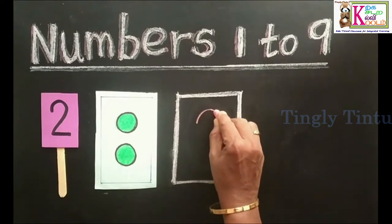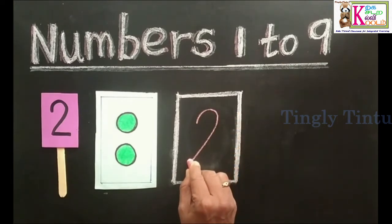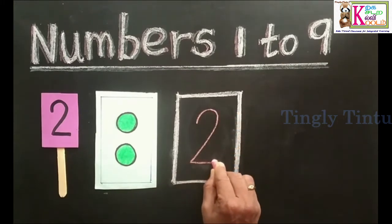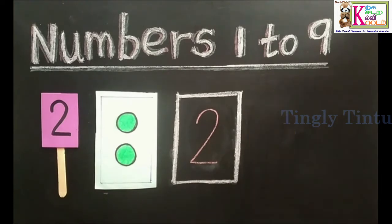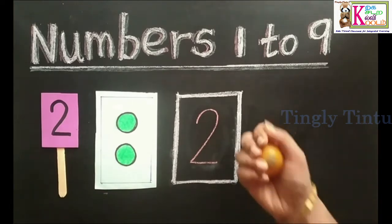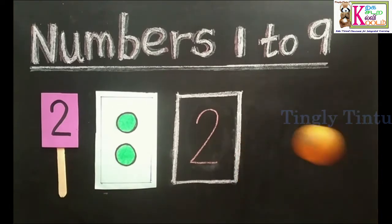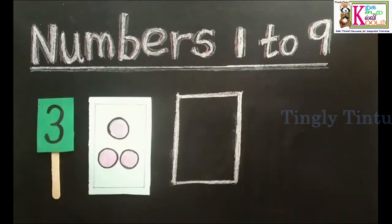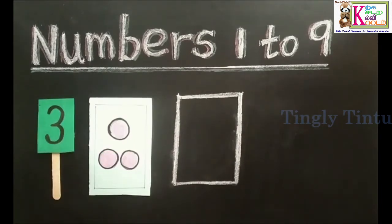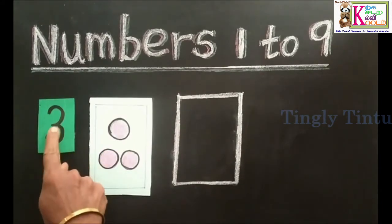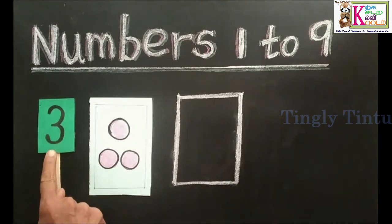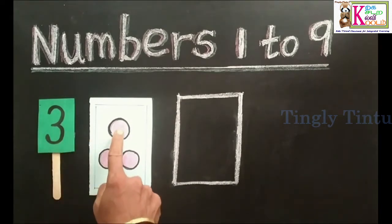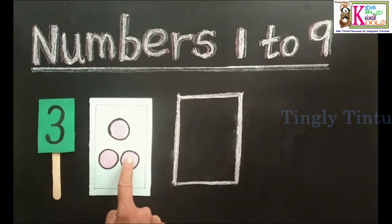Come down. Sleeping line 2. Right semicircle. Right semicircle. 3. 1, 2, 3. 3 candies.